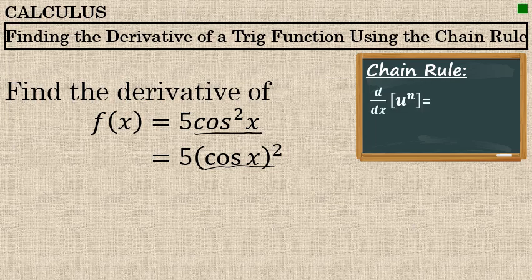The chain rule, or the special case of the chain rule known as the general power rule, says that the derivative of any u to the n — in this case our u is cosine of x and n is 2 — is equal to: take the n and move it to the front, times u to the power of n minus 1. But then you multiply by a factor of the derivative of u.